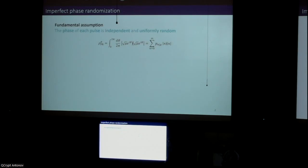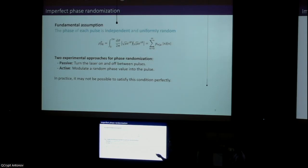However, the decoy state method has a fundamental assumption which is that we can ensure that the phase of each pulse is independently and uniformly random. In practice, there are basically two approaches to try to satisfy this condition, which we can refer to as passive and active. However, as we will see, neither of them can achieve the condition perfectly, at least in all circumstances.